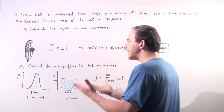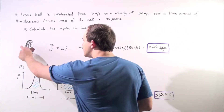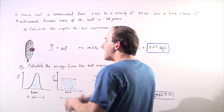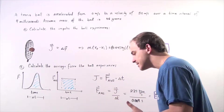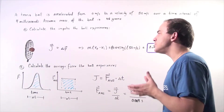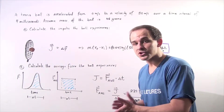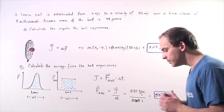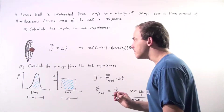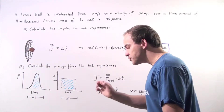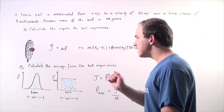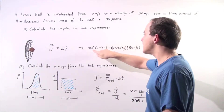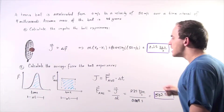The collision between the tennis ball and the tennis racket takes place, and the ball experiences an impulse. An impulse is simply change in momentum, and the change in momentum is given by taking the mass and multiplying by the change in velocity.